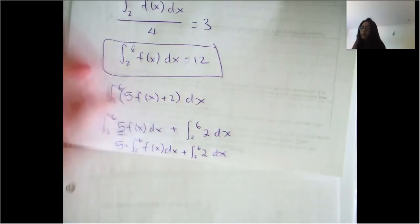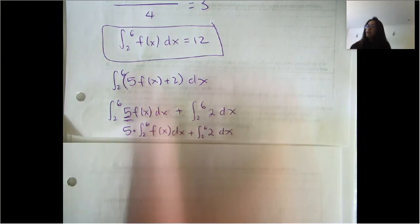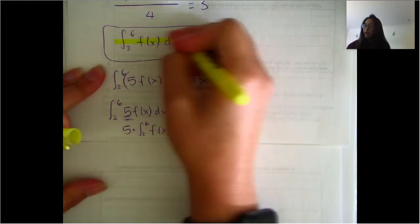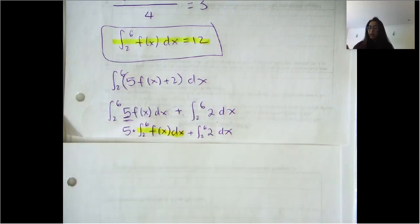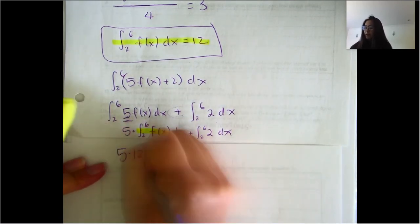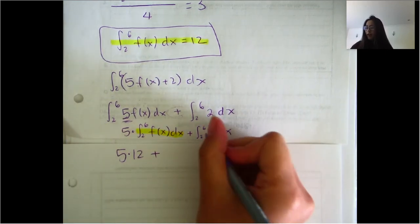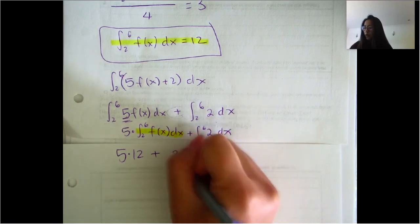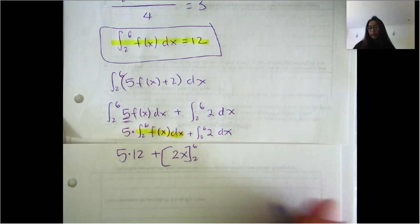So based on what we found earlier, y'all should know that the integral from two to six of F of X DX equals 12. So this right here should equal 12. So we have five times 12 plus, and then we find the integral of two, which is two X, and we evaluate that from two to six.